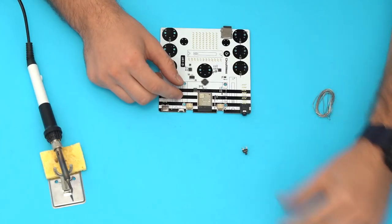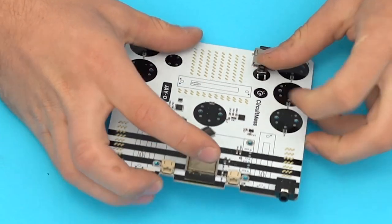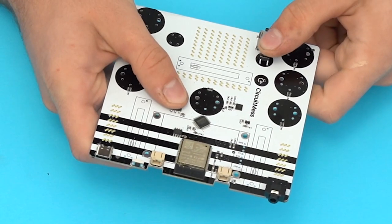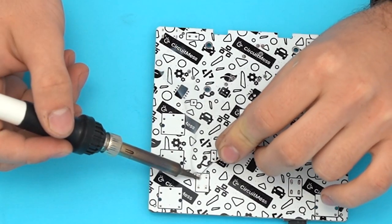Next up we have the two push buttons. They are placed in the smaller black circles on the bottom of the board and should click in place. Now let's go ahead and solder them.